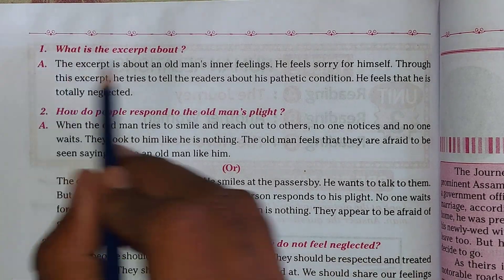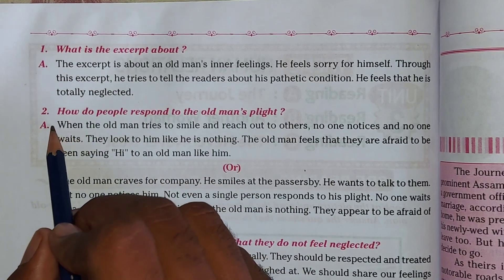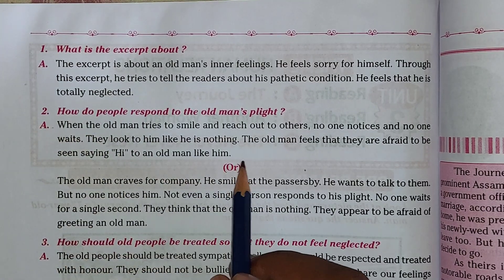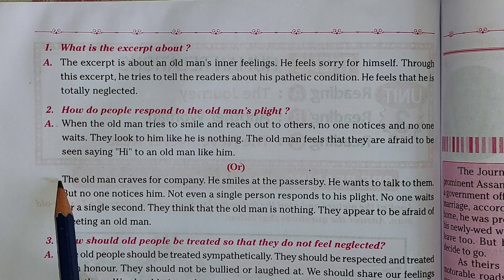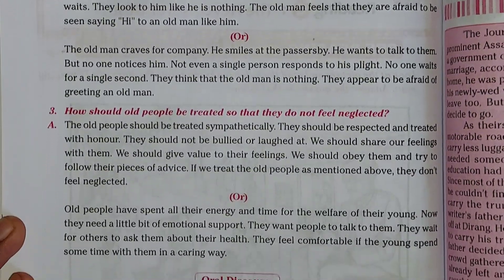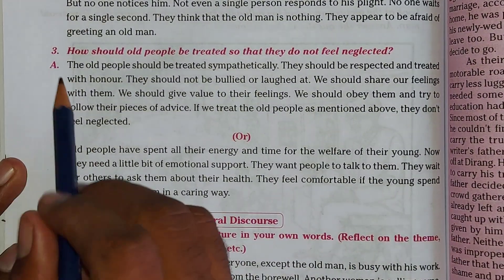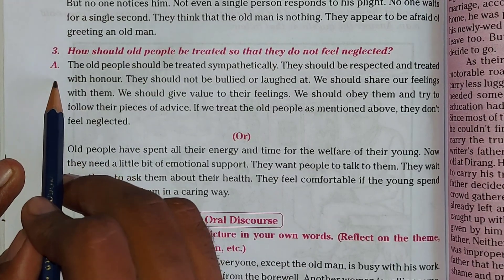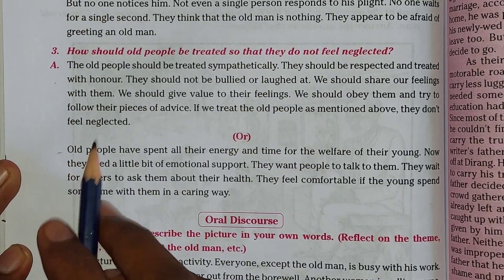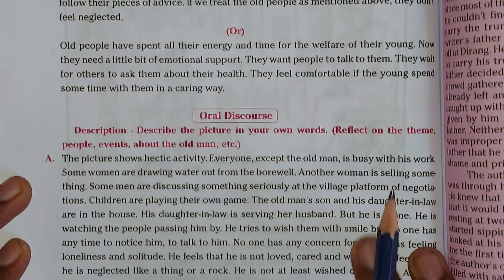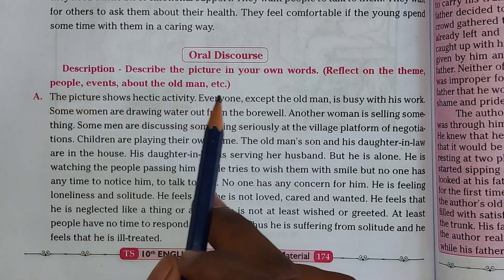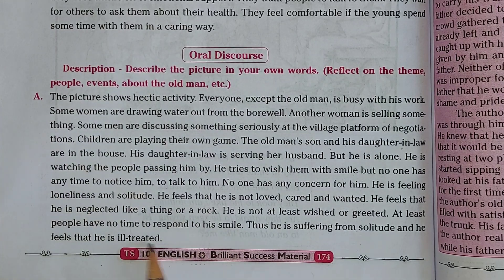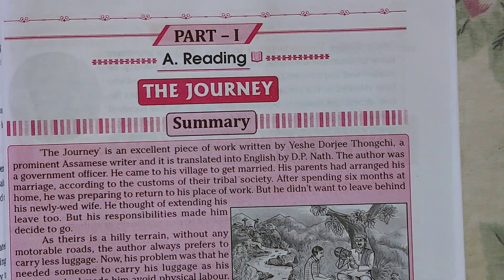You can see the first question answer starting and ending here. The second question starts here and ends here - in the second question we have two answers, you can write either answer. After that we have the third question, which also has two answers. Then we have your oral discussion question and answer. After that, let's move to 'Reading the Journey' - first we will see the summary.